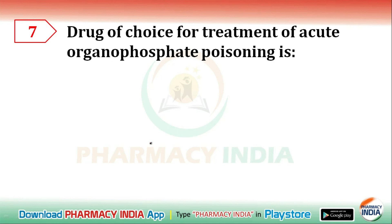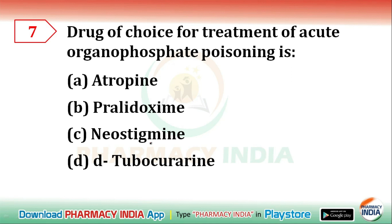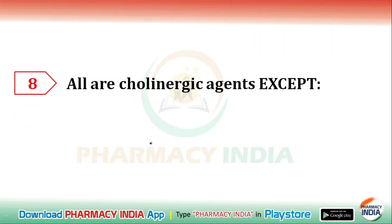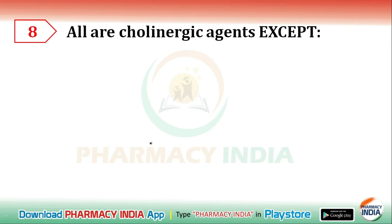Next question: drug of choice for treatment of acute organophosphate poisoning is — atropine, pralidoxime, neostigmine, or tubocurarine? Do not confuse here; the correct answer is atropine. Atropine is the drug of choice for treatment of acute organophosphate poisoning.